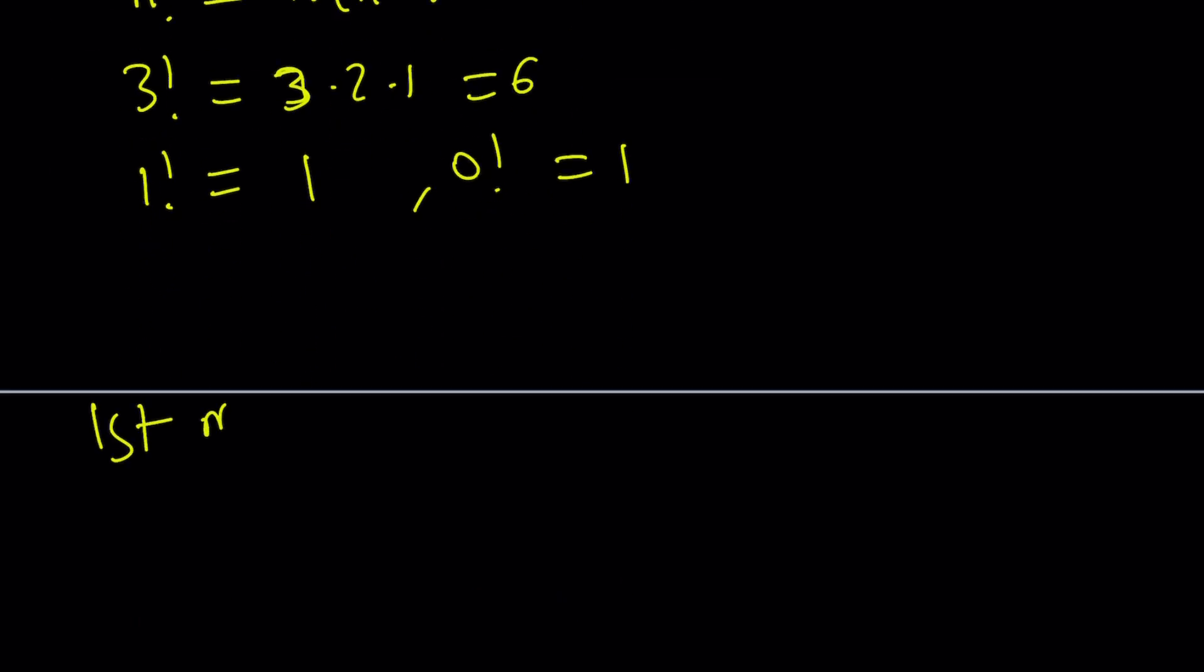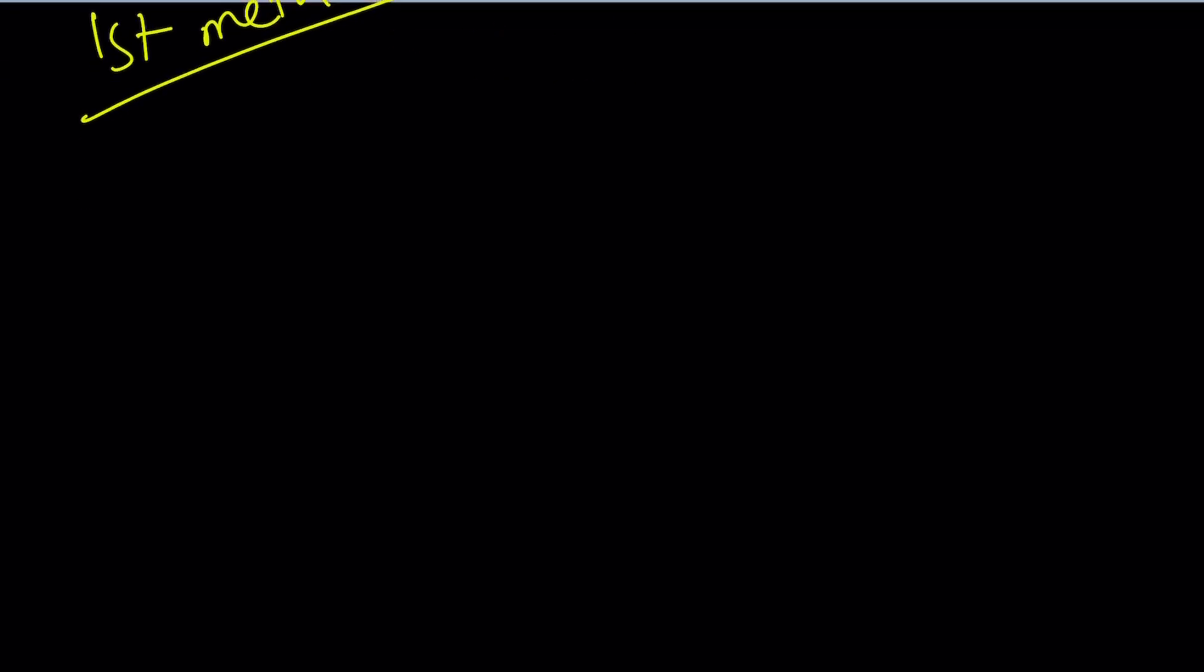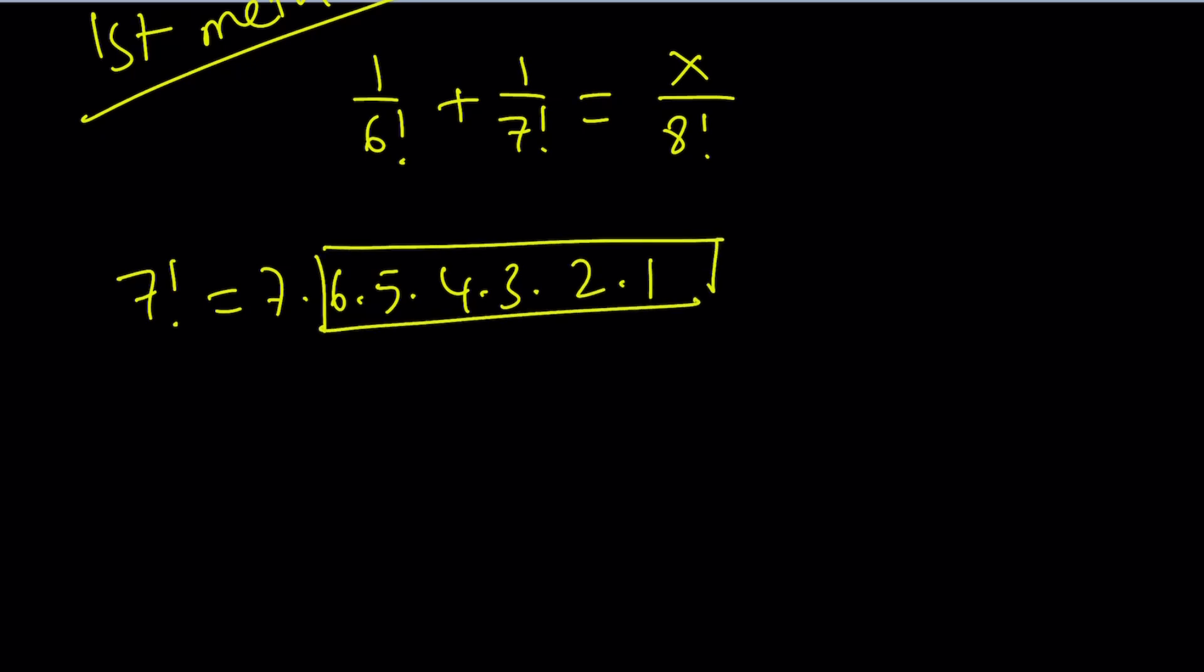Our first method is going to be making a common denominator. Let's rewrite the original problem: 1 over 6 factorial plus 1 over 7 factorial equals x over 8 factorial. Now, remember, factorials contain the smaller factorials. For example, 7 factorial is 7, 6, 5, 4, 3, 2, and 1. But this part is already 6 factorial. So we can basically write 7 factorial as 7 times 6 factorial.